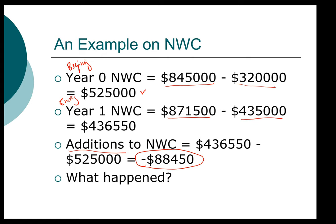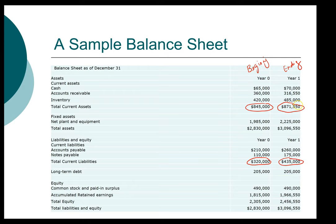To answer what happened, we have to dive a little bit deeper. From beginning to ending, we see that cash actually went up — that's an increase. Inventory also went up, but accounts receivable went down. Looking at current liabilities, accounts payable went up and so does notes payable. So the decrease in net working capital is mostly because we increased our accounts payable — we were able to obtain $50,000 more in financing — whereas our increase in inventory is $65,000. We bought more inventory, but we're not financing all of it with credit.